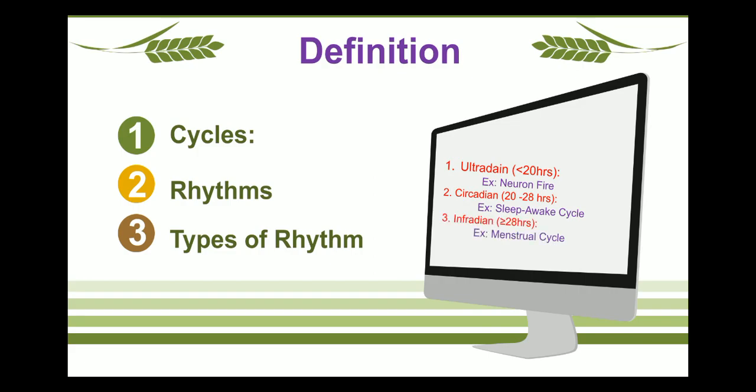Third, Infradian Rhythms — if the cycle is equal to or more than 28 days, such cycles are known as infradian rhythms. Example: menstrual cycles.